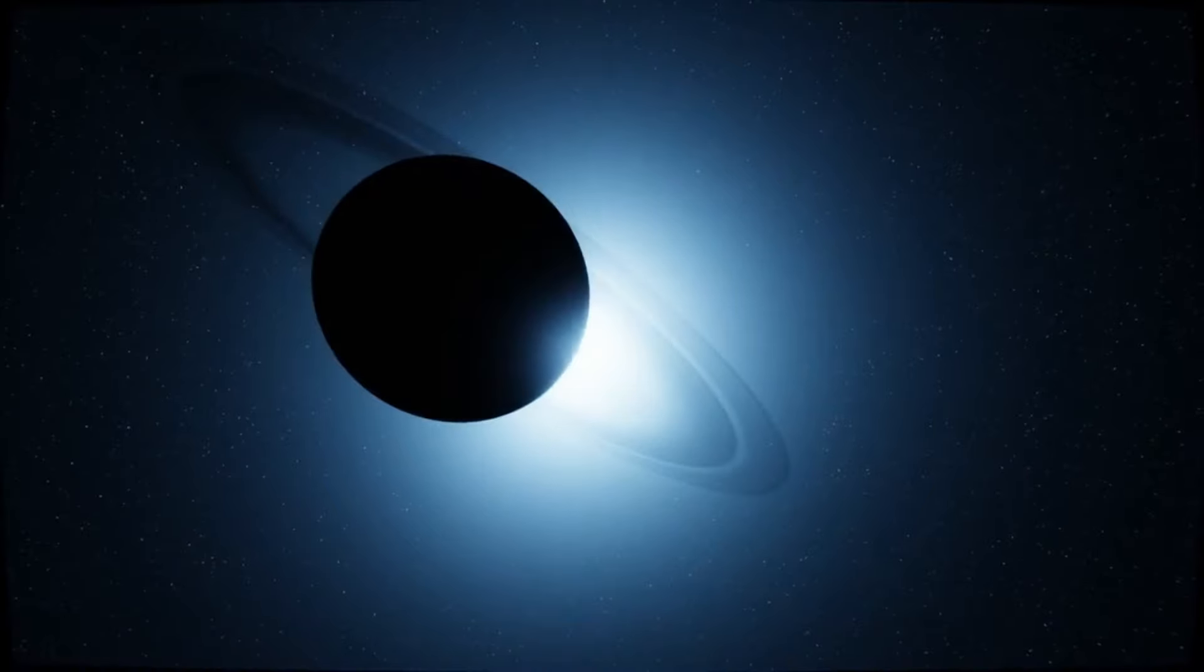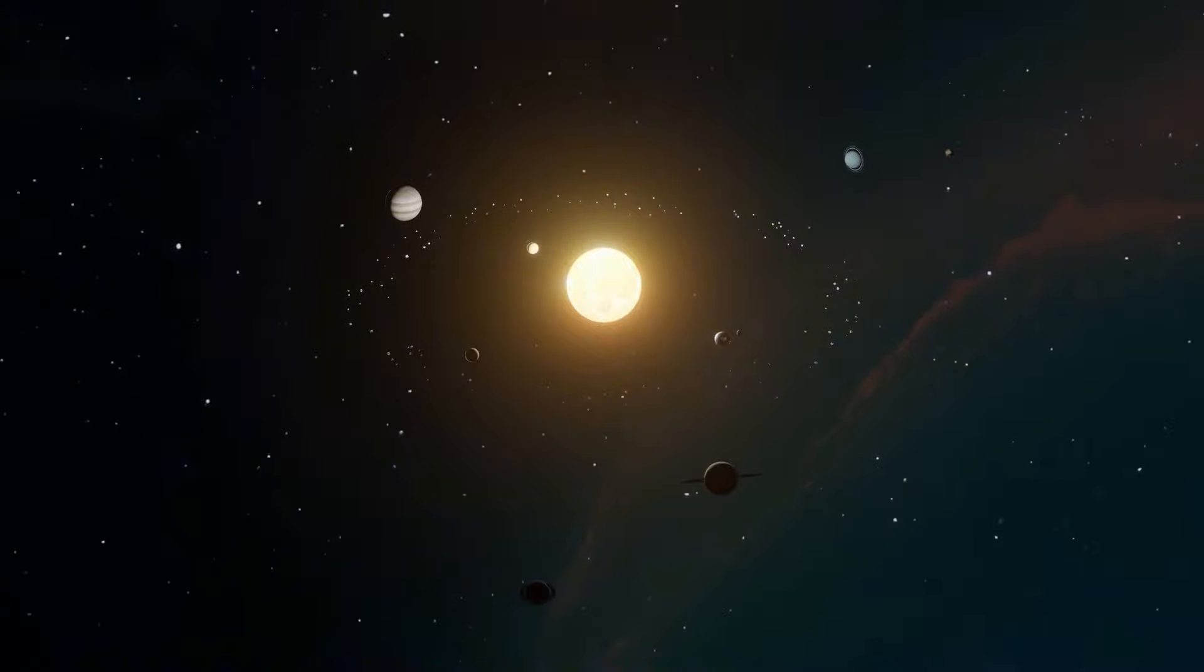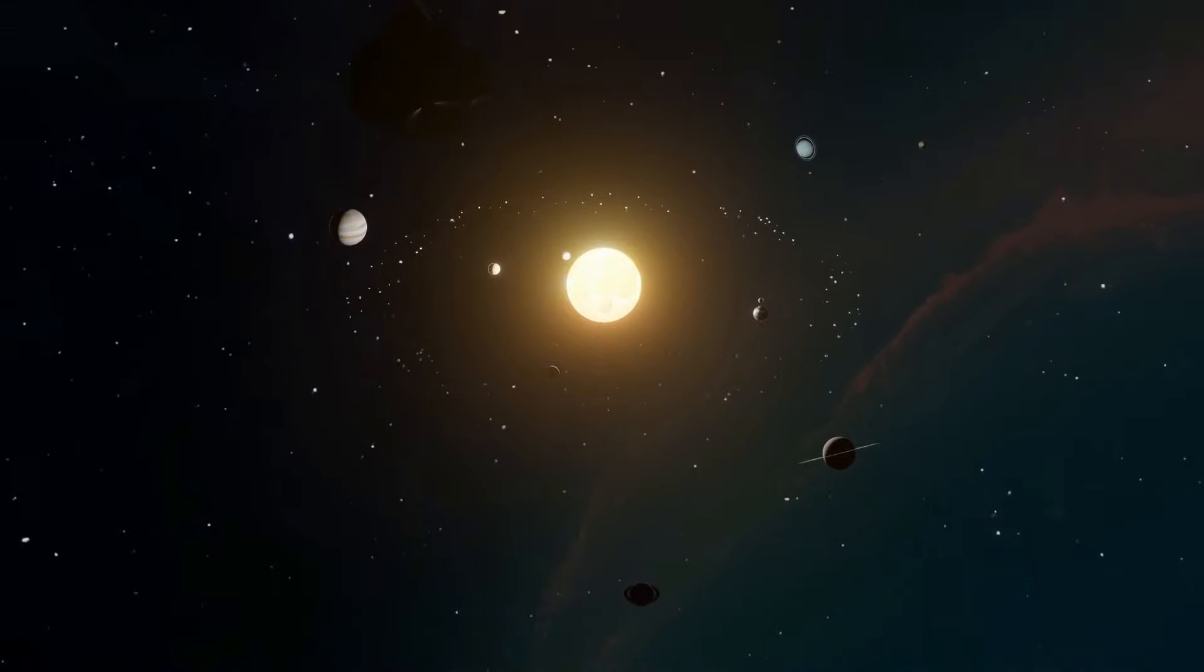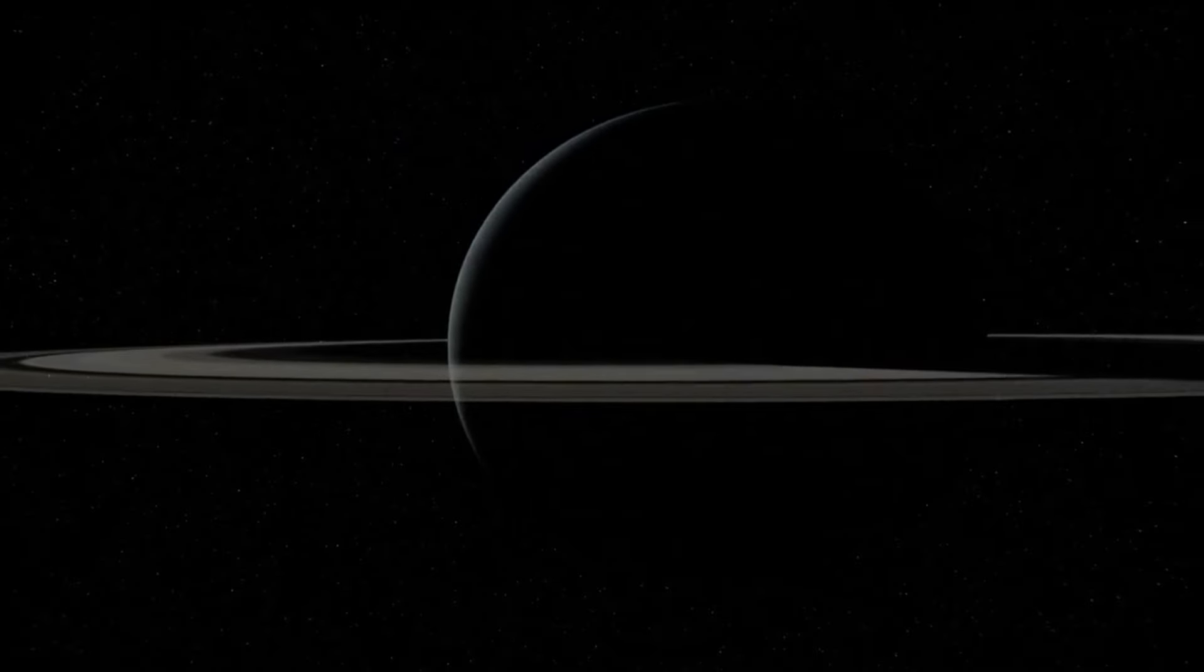In systems with many planets close together, like the TRAPPIST-1 system, comprising seven planets about the size of Earth, these planets can pull on each other with their gravity. This pulling can create a rhythm or pattern in the way the planets move, known as orbital resonances.